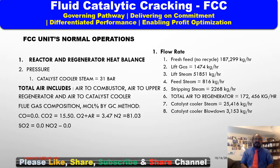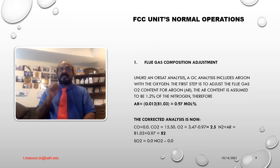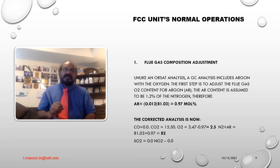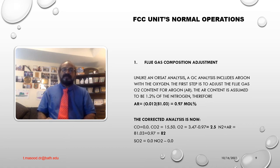Flue gas composition adjustment. Unlike an Orsat analysis, a GC analysis includes argon with oxygen. The first step is to adjust the flue gas O2 content for argon in air. The argon content is assumed to be 1.2 mole percent of the nitrogen. Therefore, argon equals 0.012 times 81.02 equals 0.97 mole percent. The corrected analysis: carbon monoxide 0.0, CO2 15.5 mole percent, oxygen equals 3.47 minus 0.97 equals 2.5 mole percent, nitrogen plus argon equals 81.03 plus 0.97 equals 82.0 mole percent.